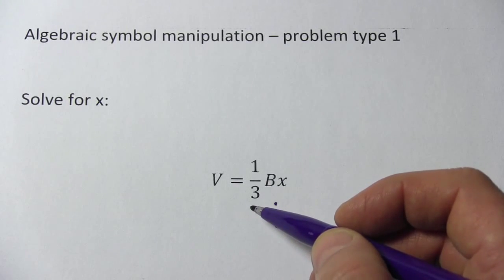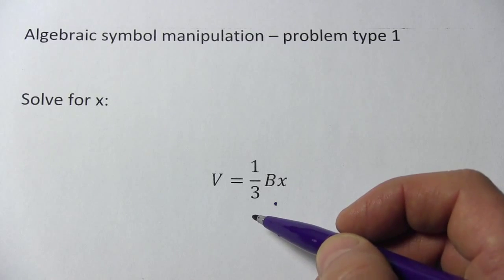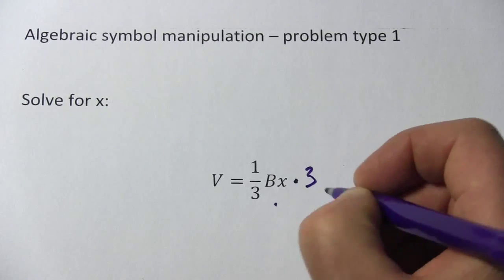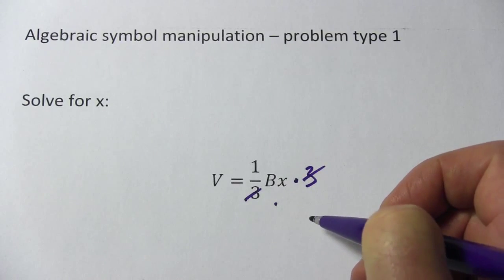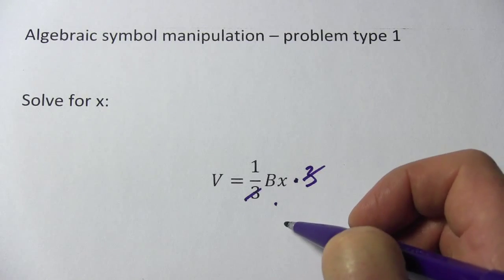Multiplying something by 1/3 is the same as dividing it by 3. So if we multiplied this side by 3, then it would basically disappear, which is great, because then there's only one thing being done to x.